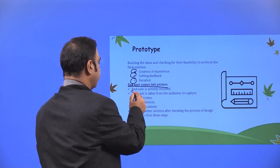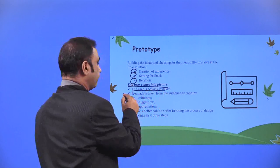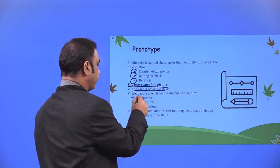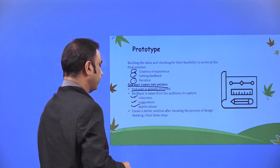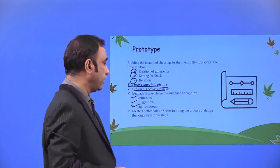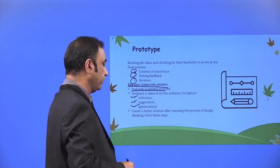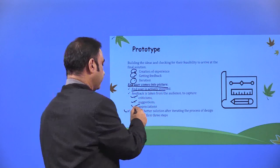End user is actively involved. Feedback is taken from the audience to capture criticisms, suggestions, and appreciations, to create a better solution after iterating the process of design thinking's first three steps.